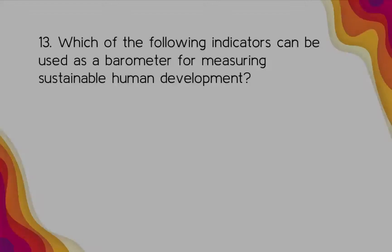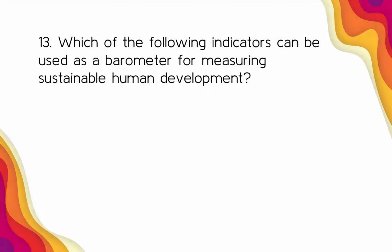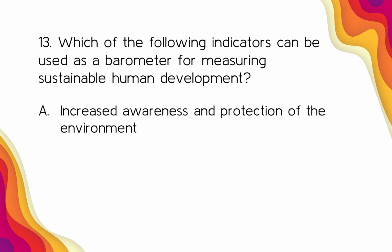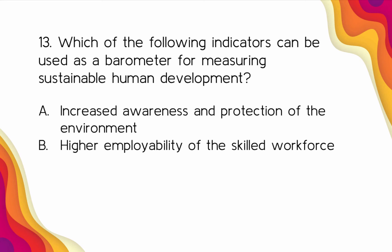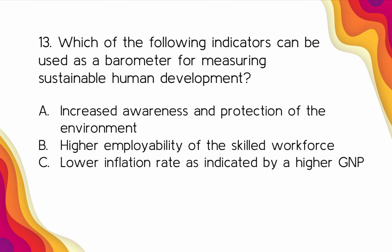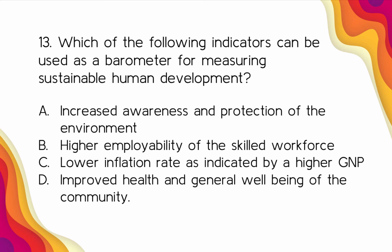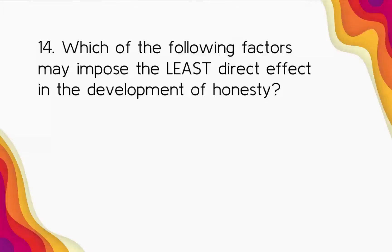Number thirteen: Which indicator can be used as a barometer for measuring sustainable human development? A) Increased awareness and protection of the environment, B) Higher employability of the skilled workforce, C) Lower inflation rate as indicated by a higher GNP, D) Improved health and general well-being of the community. The best answer is Letter D — improved health and general well-being of the community. Options A can indicate sustainable environmental development; B and C can measure sustainable economic development.